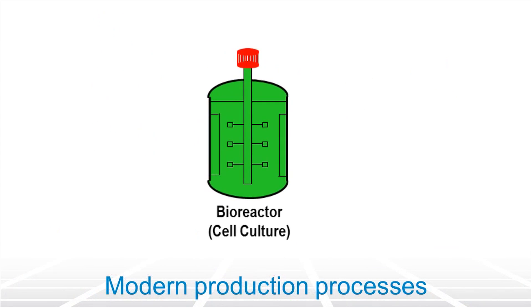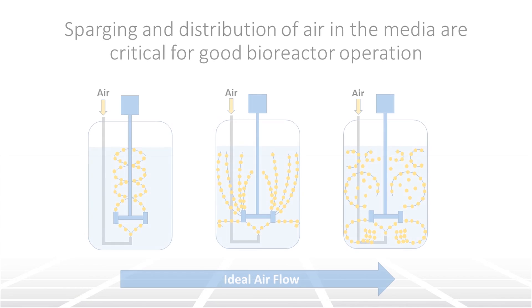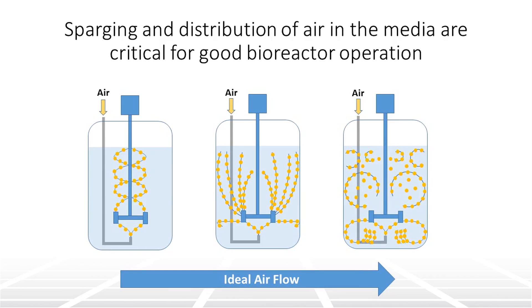Many factors impact this, and one of these is sparging. For the purposes of bioreactor cell culture, sparging is the introduction of air and, more importantly, oxygen to the cell culture media. Once the oxygen is dissolved in the media, it is used rapidly by the cells and therefore must be fed continuously via specially designed spargers.